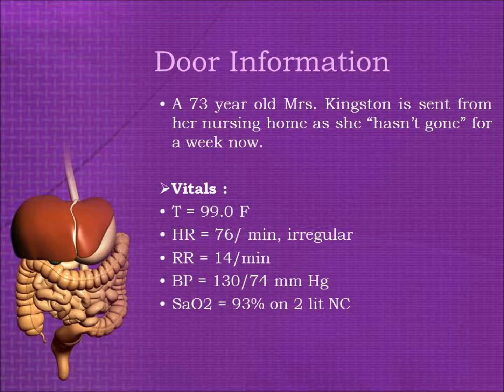Vitals: Temperature is 99.0 Fahrenheit. Heart rate is 76 per minute, irregular. Respiratory rate is 14 per minute. Blood pressure is 130/74 mmHg. Oxygen saturation is 93% on 2-liter nasal cannula.